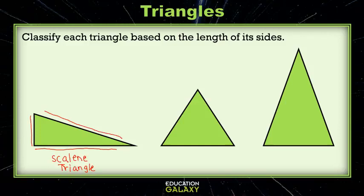The second triangle, all three sides look like they're exactly the same length. So if they're all equal, then they're equilateral.